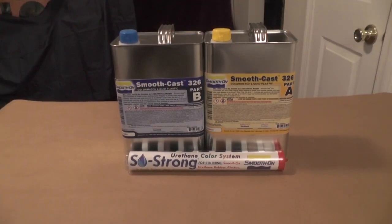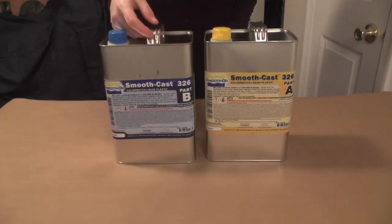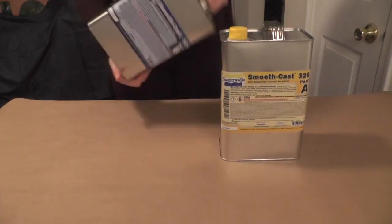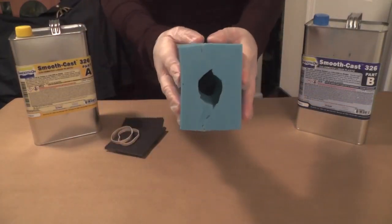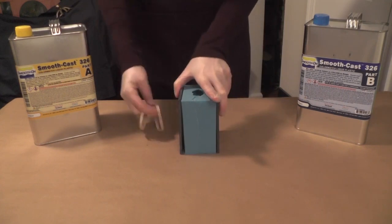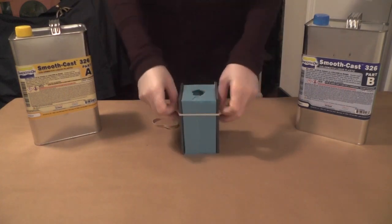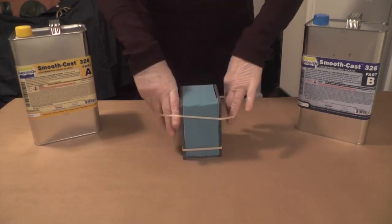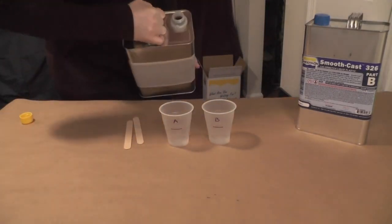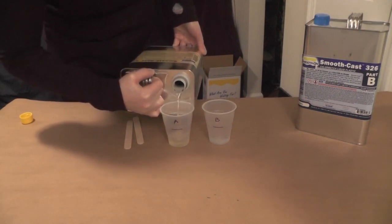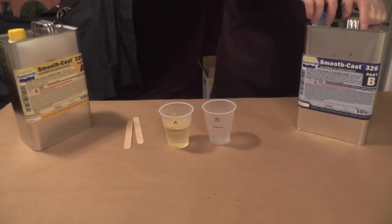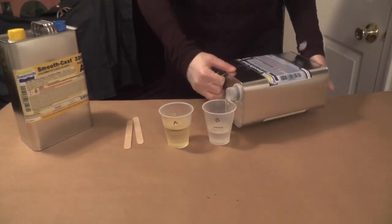For this project, I'll be using Smooth Cast 326 and Sew Strong Colorant. As always, I'm going to thoroughly pre-mix the material by shaking the part A and B thoroughly. Next, I'm going to prepare my mold. I'm taking a few pieces of rigid foam core and rubber banding them to either side of the mold. This will give it even pressure all around and prevent it from leaking. At this point, I'm ready to dispense my material. Smooth Cast 326 can be mixed by measuring one part A to one part B by volume. These equal parts by volume make it super easy to dispense and measure accurately.